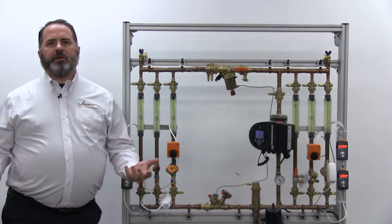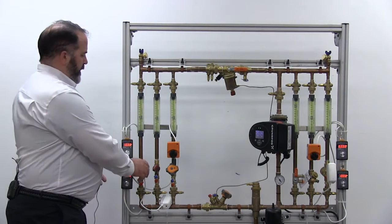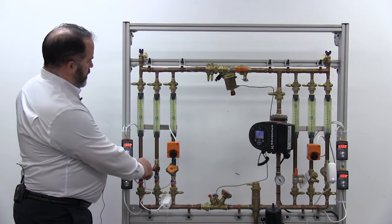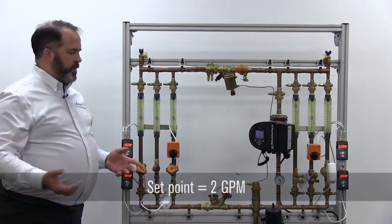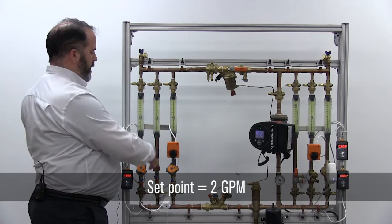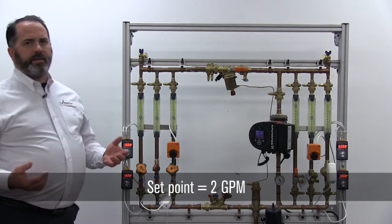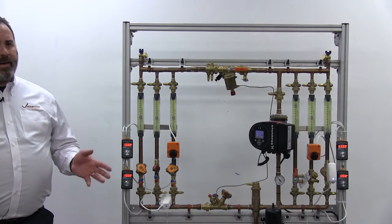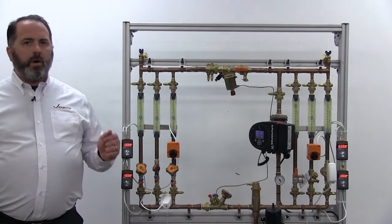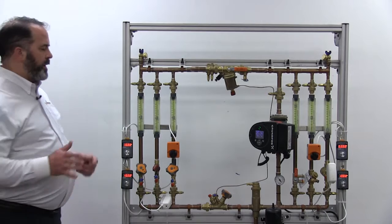We're going to start by what we call proportionally balancing the system, so we'll go to each of our coils. We'll go to the balancing valves, we'll set those valves so they're all equal. So we'll go across from one to two, starting from the index coil working our way into the system, and set all of our coils so they're all equal flow, not necessarily a design flow at this point, but all equal.